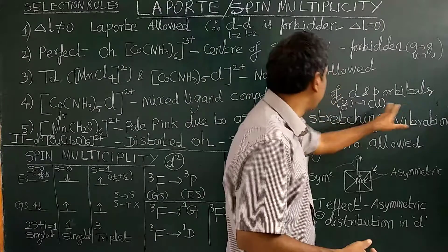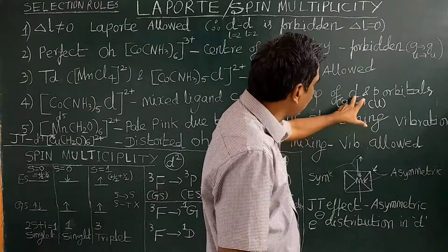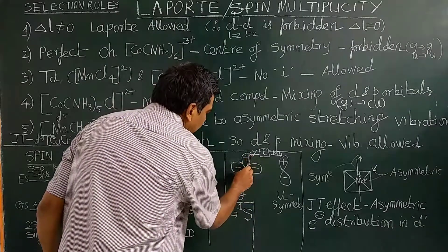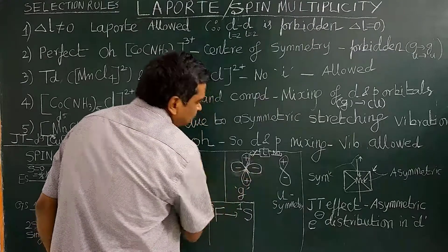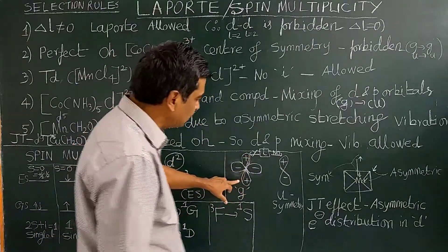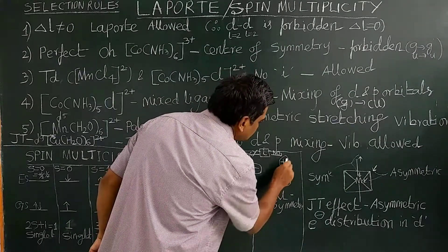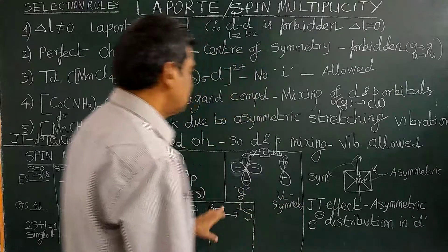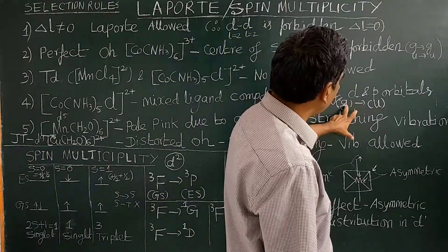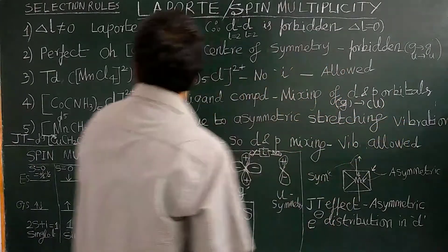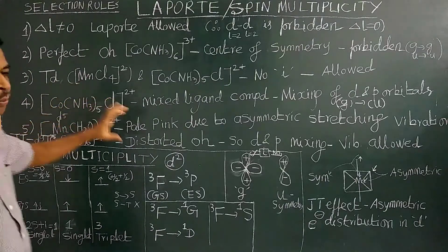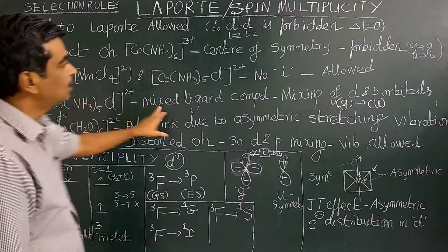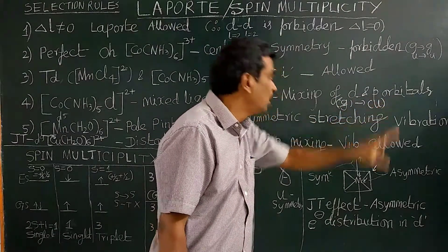There is mixing of d and p orbitals. The d orbital has g (gerade) symmetry — gerade means center of symmetry. The p orbital has u (ungerade) symmetry — no center of symmetry. So a d orbital is g symmetry and p orbital is u symmetry. A g to u transition is allowed. Mixed ligand complexes will be asked about in competitive examinations: why are mixed ligand complexes intensely colored? Because of mixing of d and p orbitals — a g to u transition.